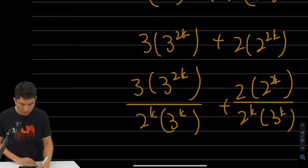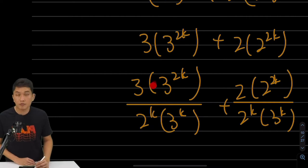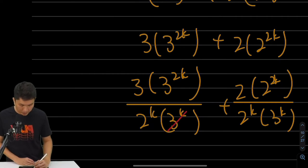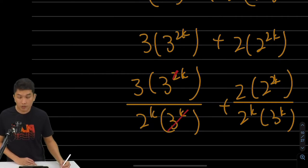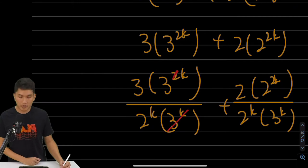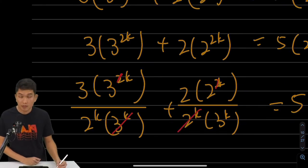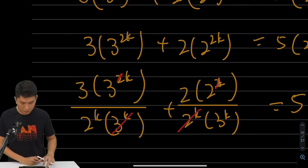And why does this work? Because then I can cancel. Now, 3 to the 2k is actually 3 to the power of k times 3 to the power of k. So if I cancel away 1 3 to the power of k in the numerator, I'm just left with 1 3 to the power of k. Likewise, for the next term, we can cancel this. Then I'm just left with 2 to the power of k in the numerator.